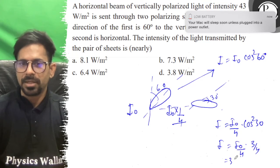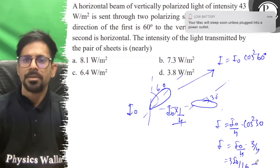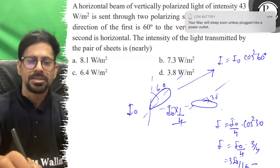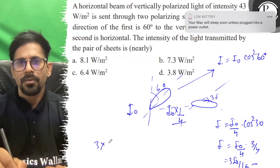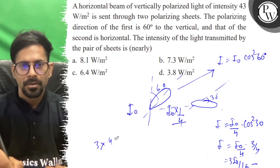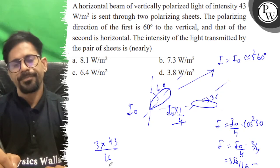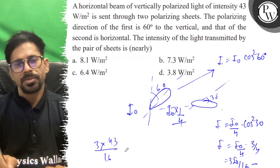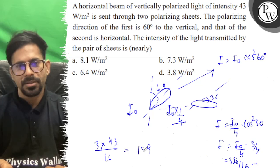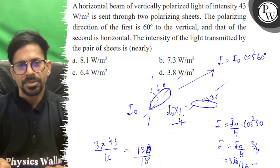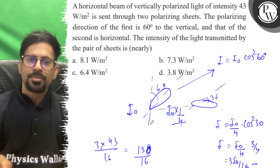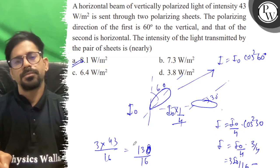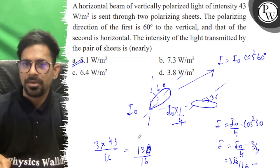So the total is 3I₀/16. The right answer to the question is option A. All the best.